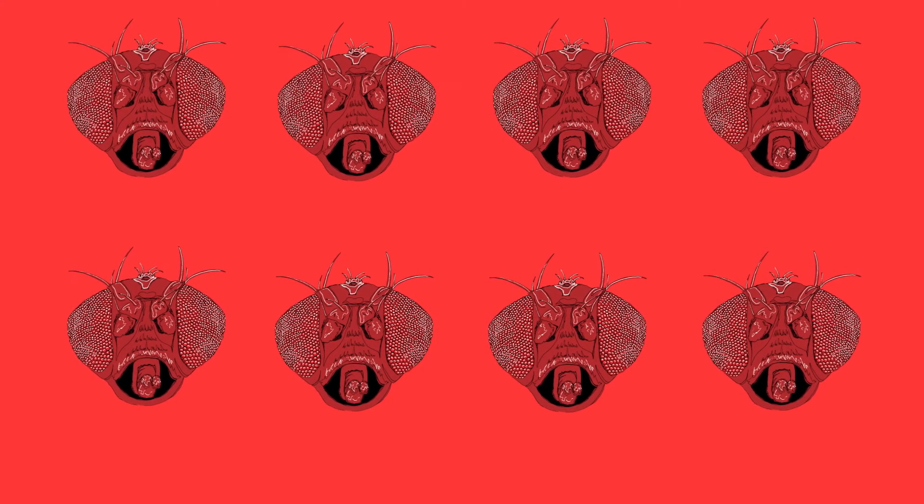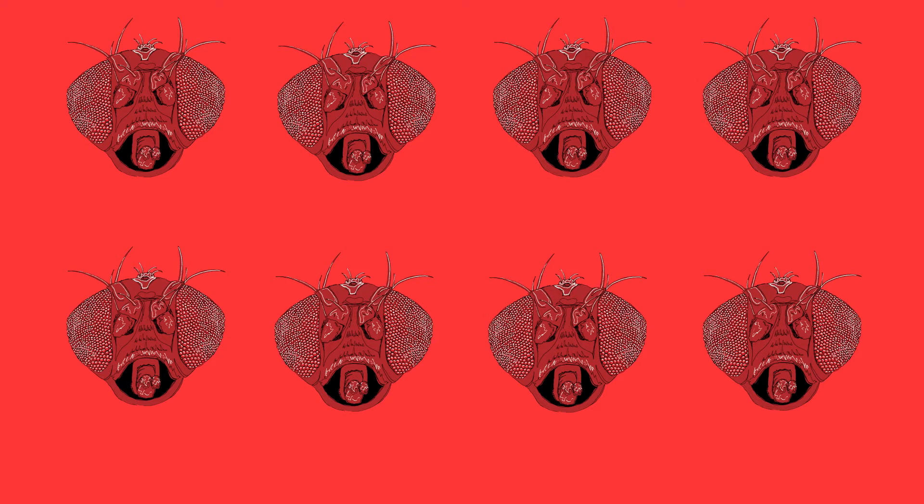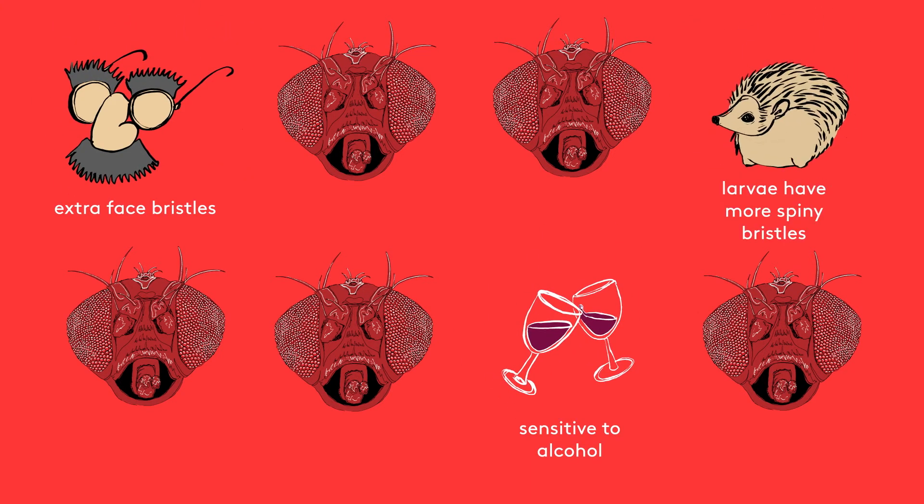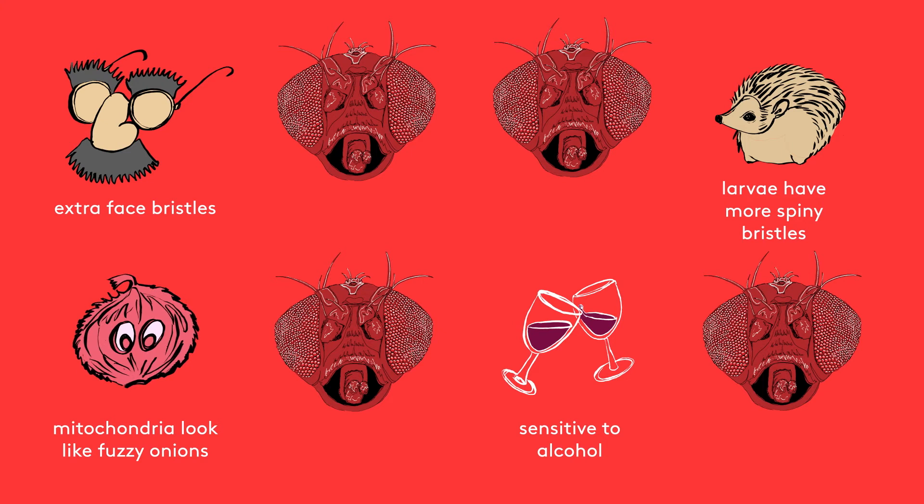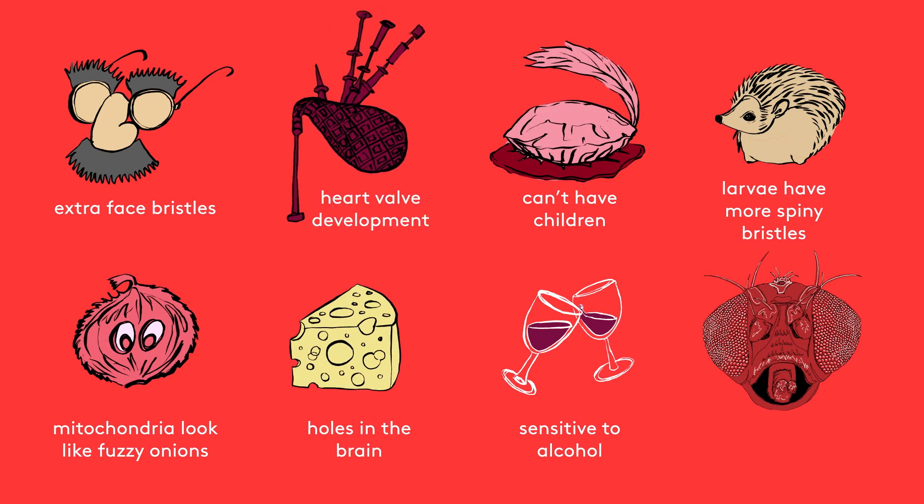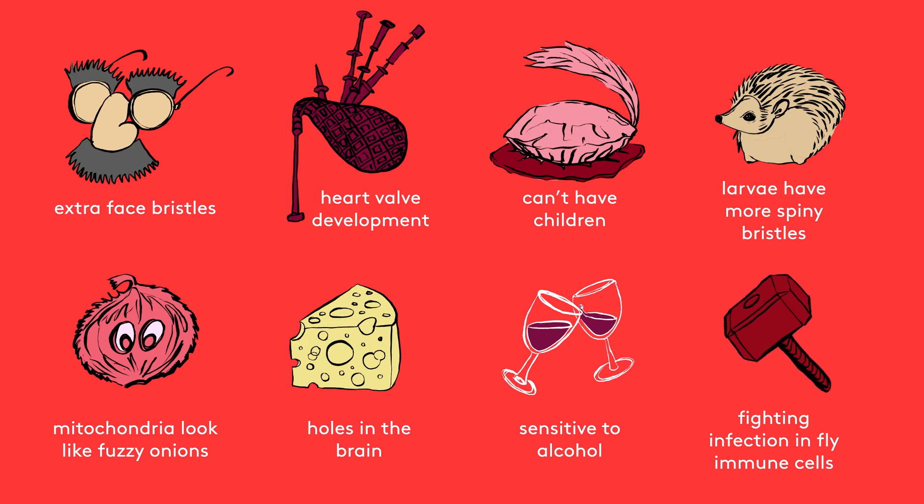Another legacy of Morgan's work was his quirky convention for naming genes. This is still held today if the gene is discovered in Drosophila first. He named the gene after the physical characteristic, or phenotype, that it produced. To date, this has resulted in Groucho, Cheap Date, Hedgehog, Fuzzy Onions, Tudor, Swiss Cheese, Bagpipe, and Thor, along with many others.